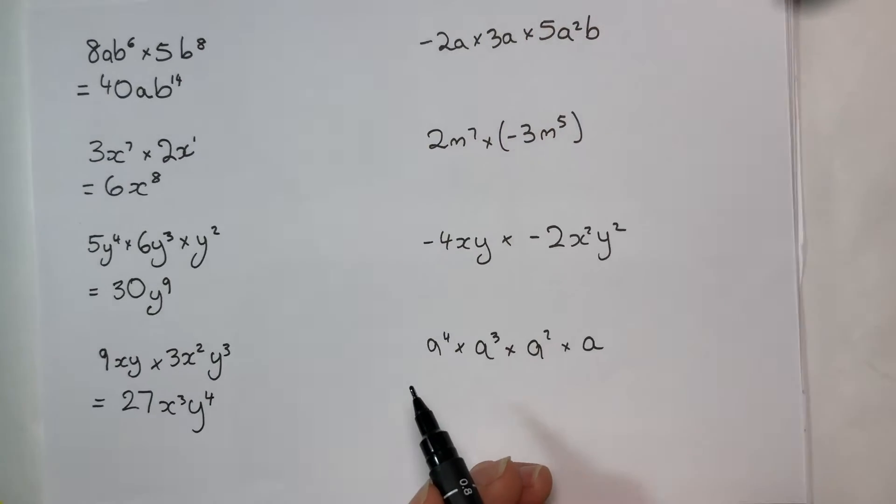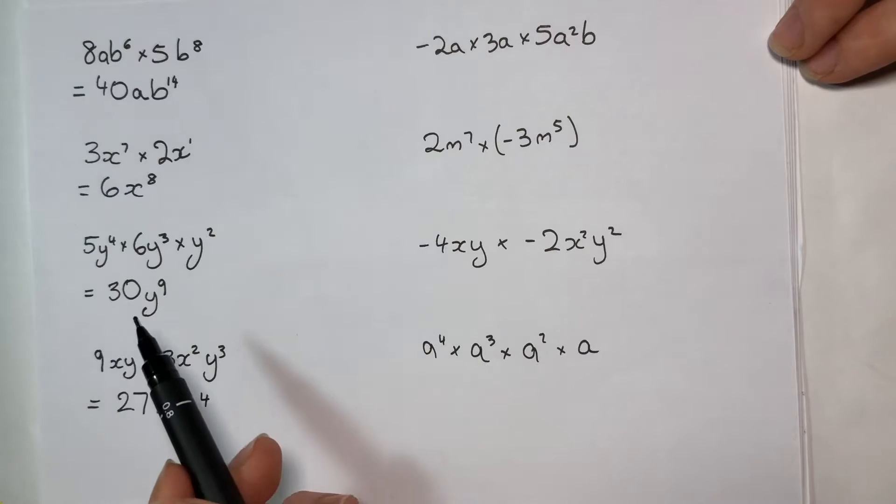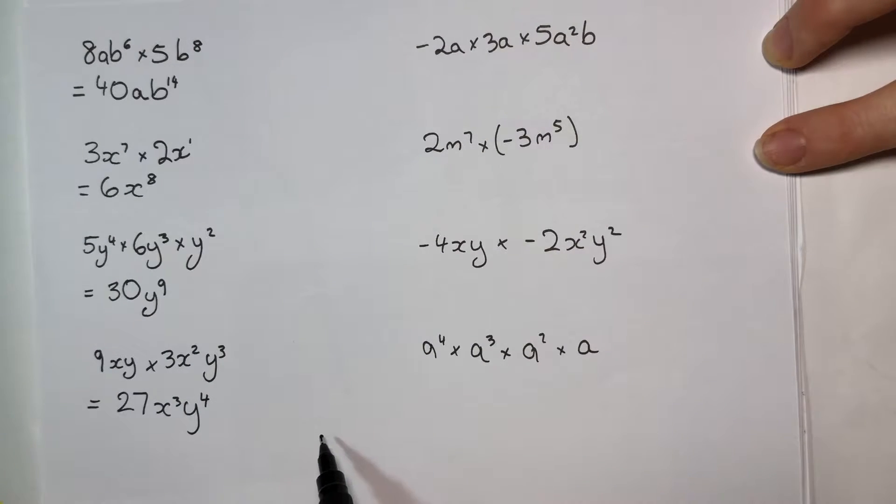So the number at the back, the index number actually counts the timesing, whereas the number at the front in algebra, so say 2a, that means a plus a. The number at the front counts the adding, multiplication is a shortcut for addition, whereas the number at the back counts the timesing and that's because powering is a shortcut for timesing.